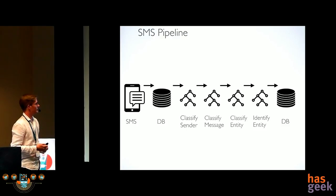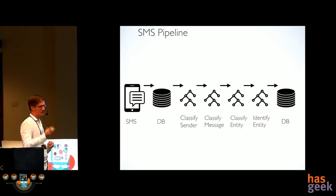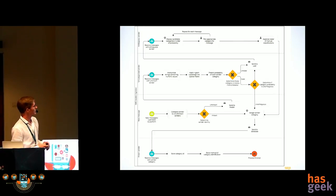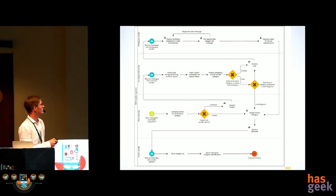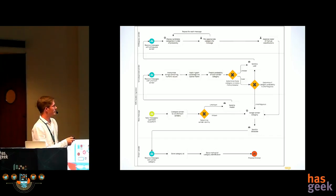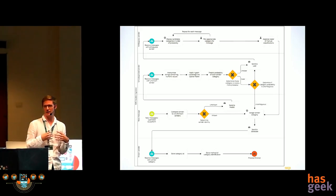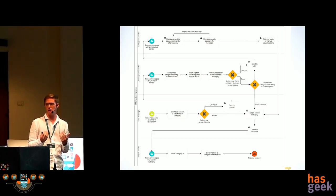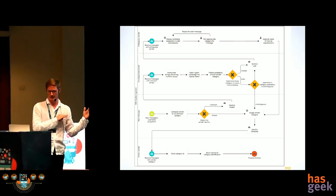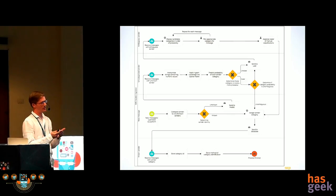We have our pipeline: receiving SMSs, sending them into each classifier, figuring out when to store, send, and classify, with structured financial data going into our database. An important principle here is understanding the human-machine trade-off. Humans can do highly sensitive analysis and recognize variance easily — machines don't do it as well. So have a machine solve the problem, but try not to rely on it completely. Figure out how to combine the two.